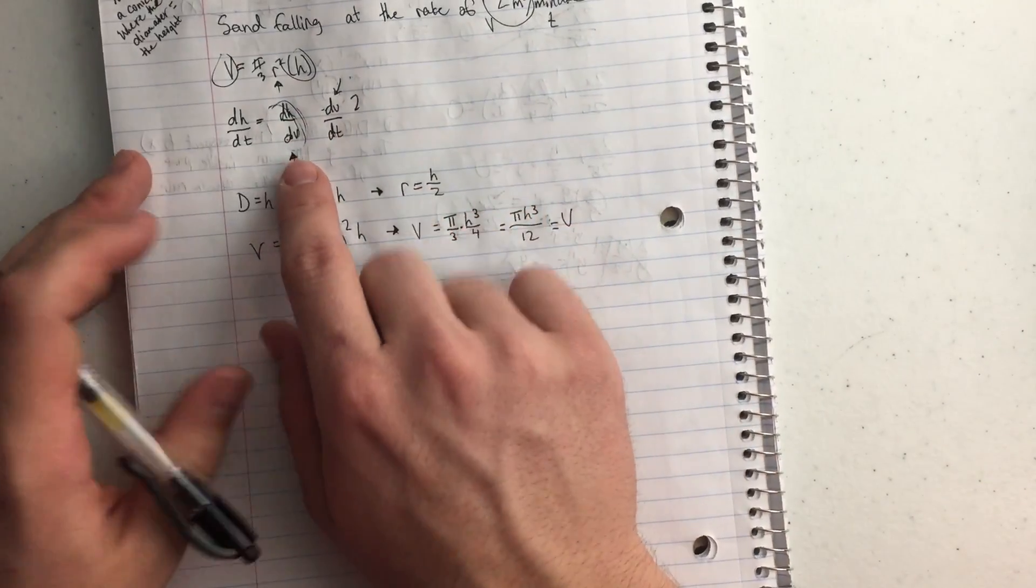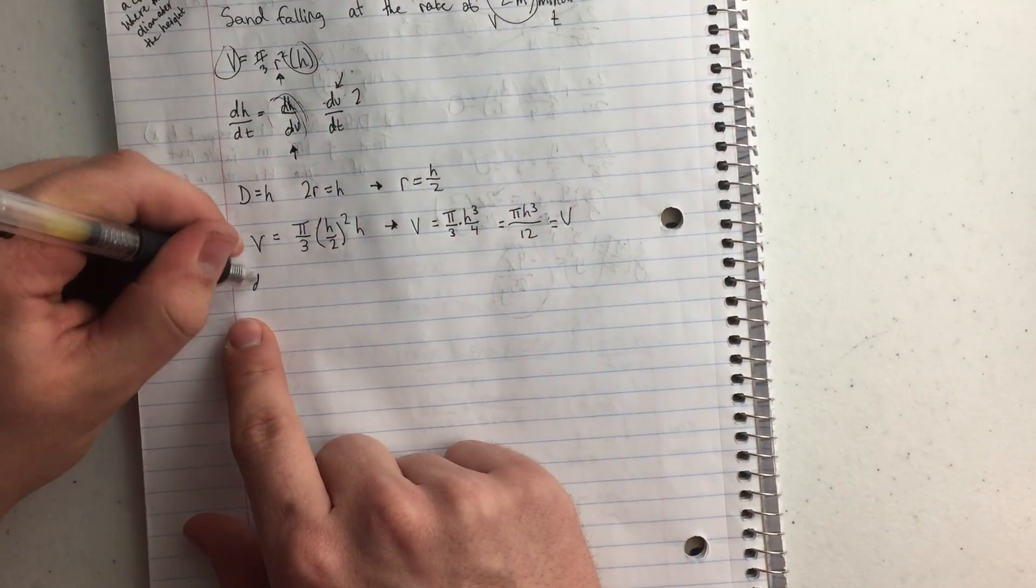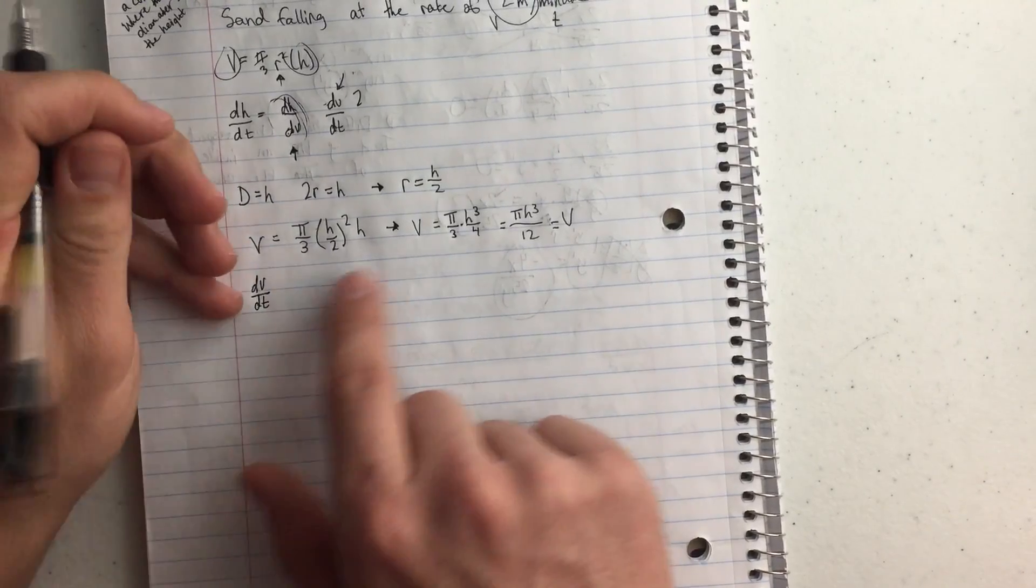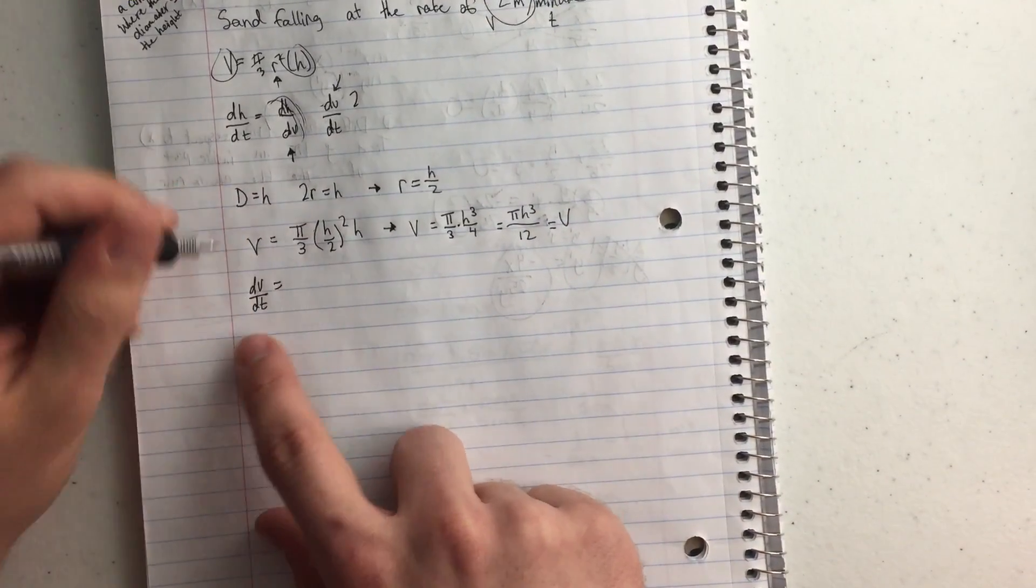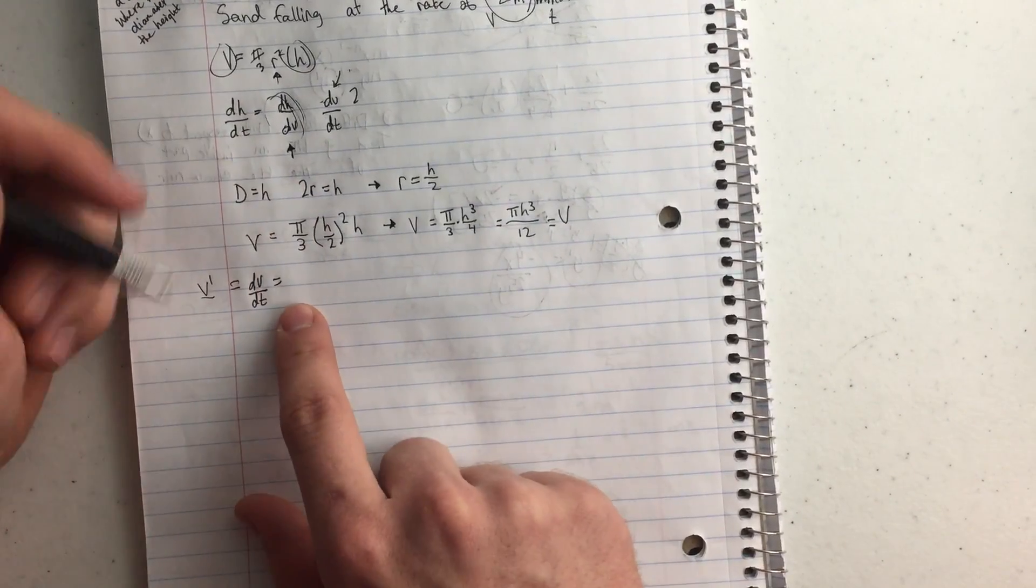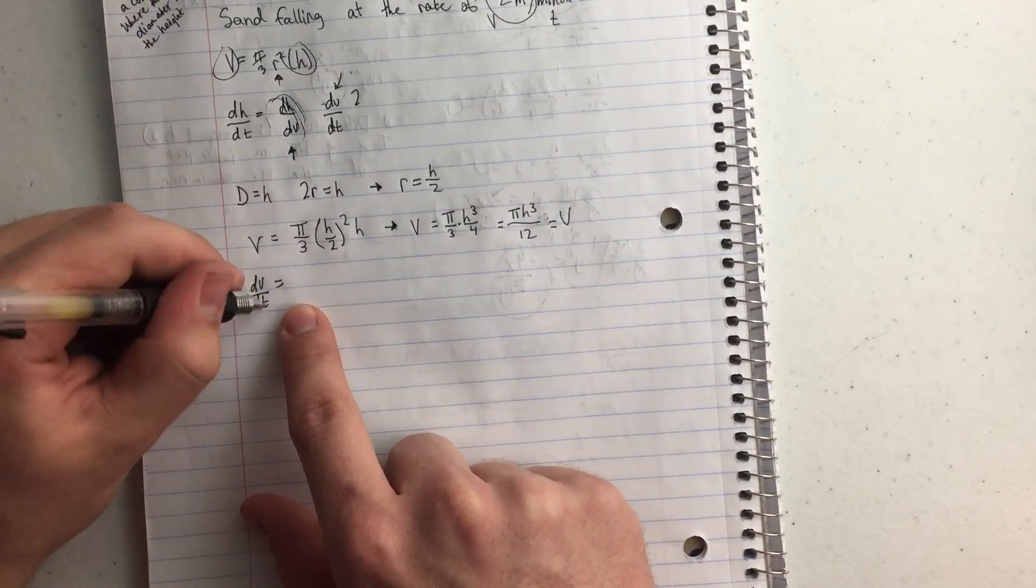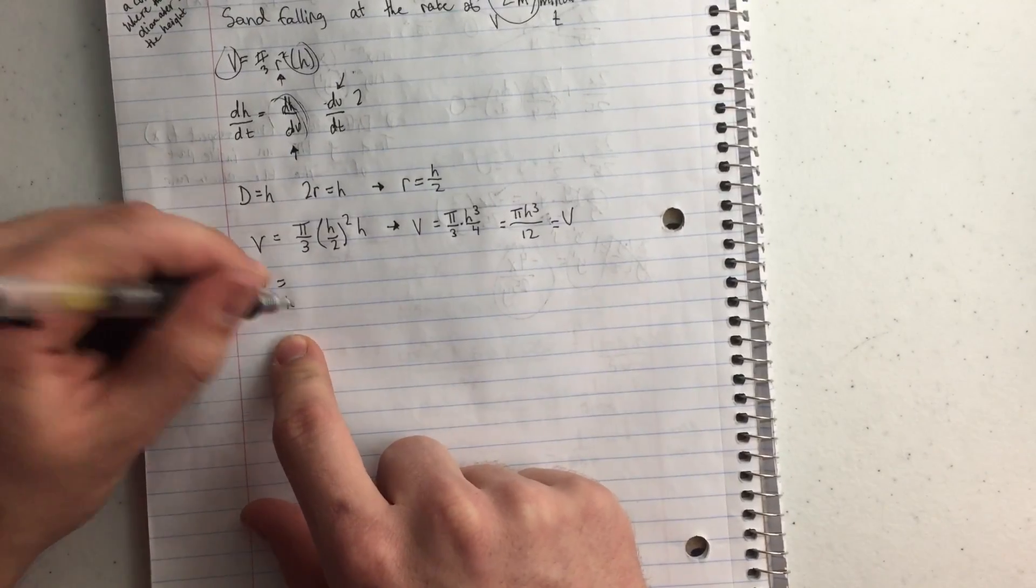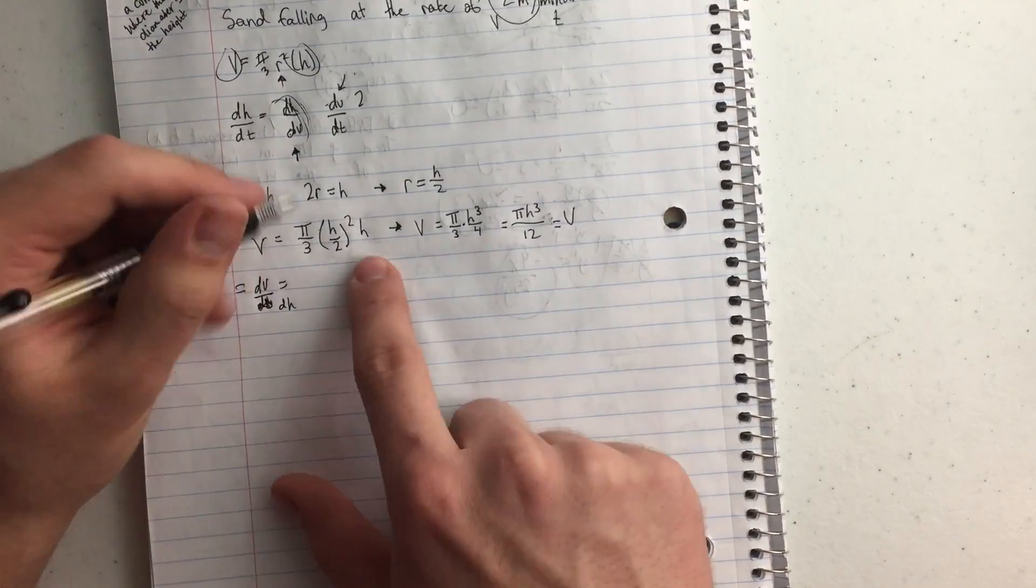But I need the derivative of the volume, so I'm going to do that. I'm going to take the dv over dh. So the derivative of volume is going to give me dh. So that's going to equal v prime, if you will. And so I'm going to have dv over dh, because I have the height. It's the height in the equation here.